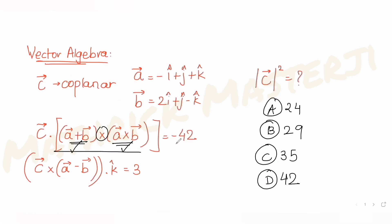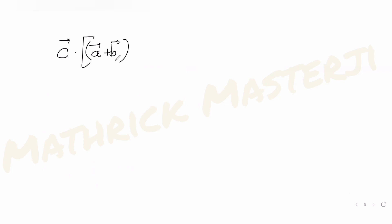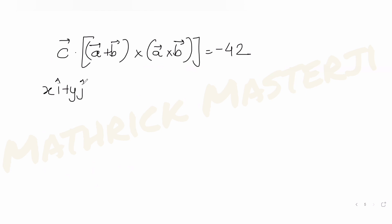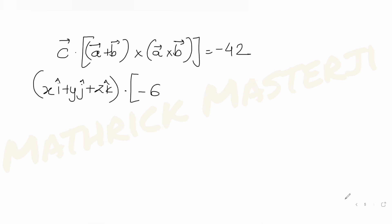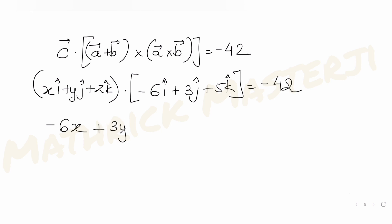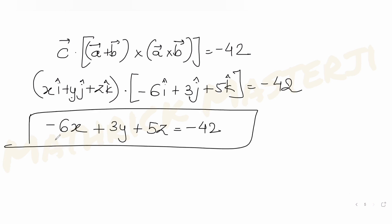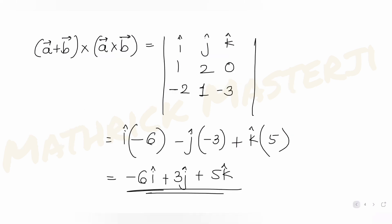The first condition says c dot [(a+b) cross (a×b)] equals minus 42. With c = xi + yj + zk and (a+b)×(a×b) = −6i+3j+5k, the dot product gives minus 6x plus 3y plus 5z equals minus 42. This is Equation 2.